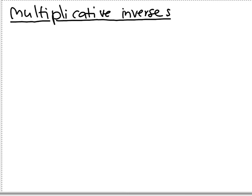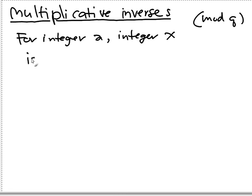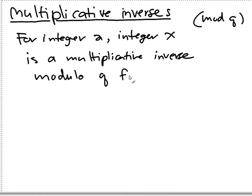Alright, so let's start by the definition. We say that if you do everything mod q, for integer a, an integer x is a multiplicative inverse modulo q for a if a times x equals to 1 mod q.